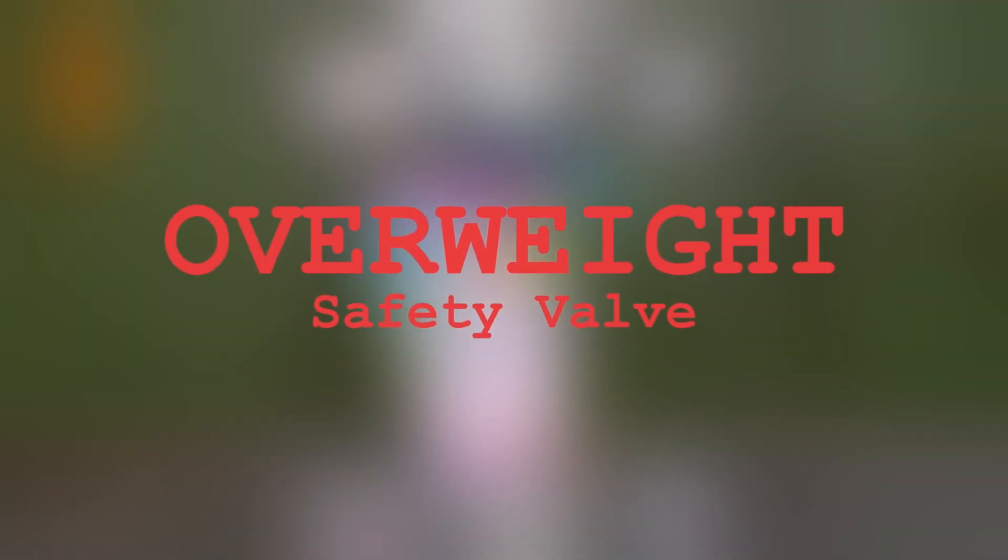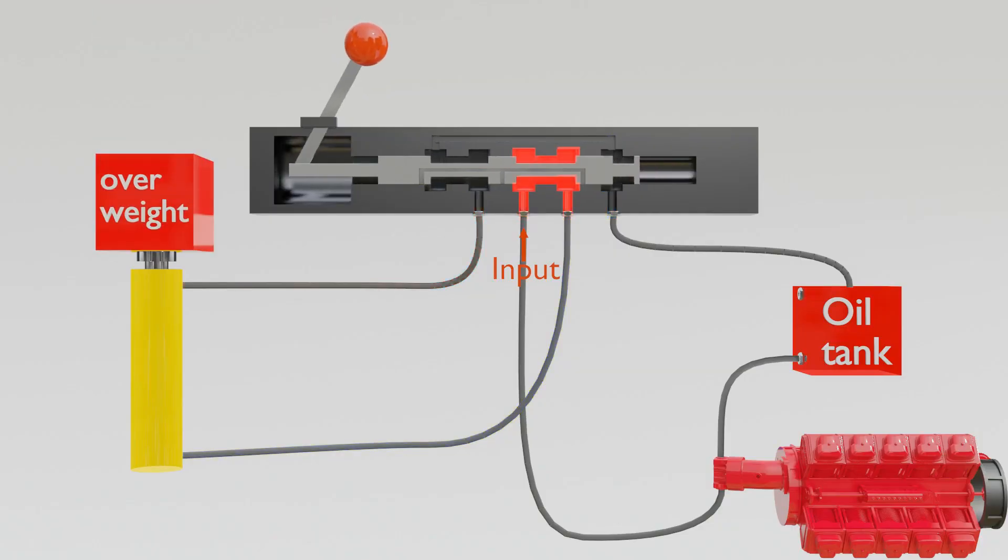We have one last component we need for this mechanism: an overweight safety valve. If you want to push something that is heavier than what the pump can manage, a build up of pressure will occur, as the piston will not move and the pump will keep pumping as much as it can until it breaks.